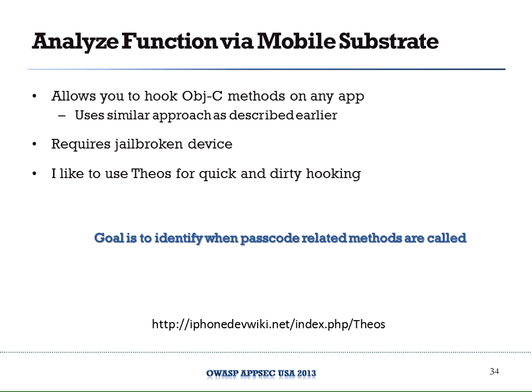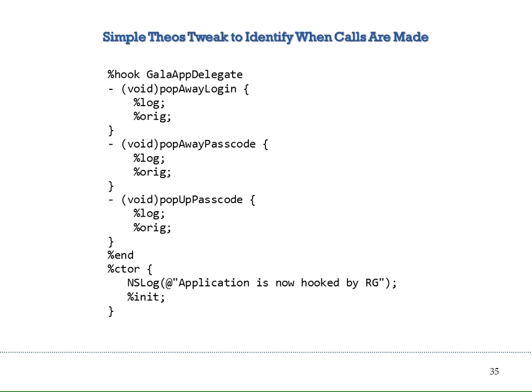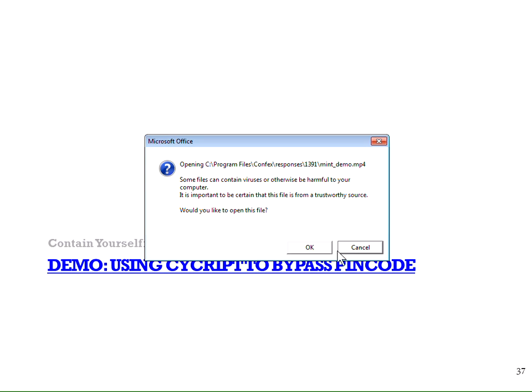Writing a Cydia Substrate tweak takes about five minutes. All you do is specify %hook with the object you want to hook into and re-implement any method within it. I start with popAwayPasscode, add a %log to log it to the console when it runs, and then %orig to run the original code — so the app works as expected and I can see from the console when it actually executes. There's also a tool called Cycript which I'll use here to demonstrate method hooking via a command-line interpreter.